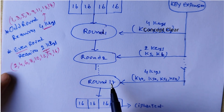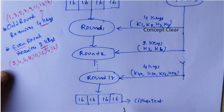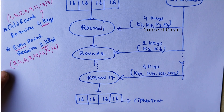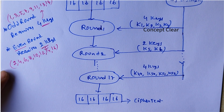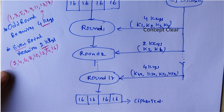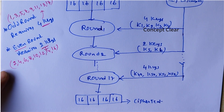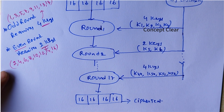After performing round 17, the output we get is the ciphertext. This is the IDEA algorithm block diagram.